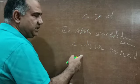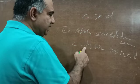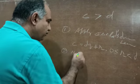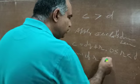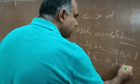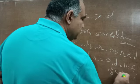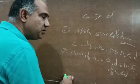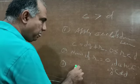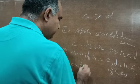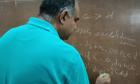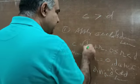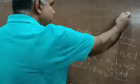Now at this step: if remainder R is 0, then D is the HCF of C and D. If R is not 0, then apply Euclid's Division Lemma again, this time to D and R.